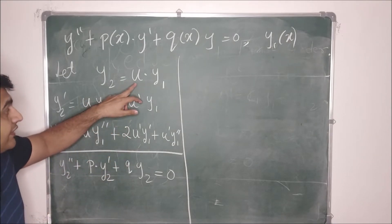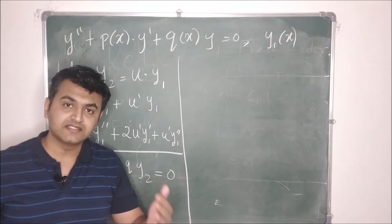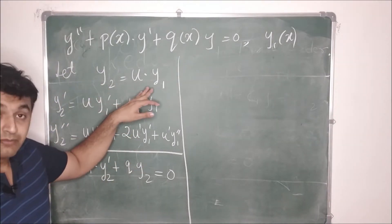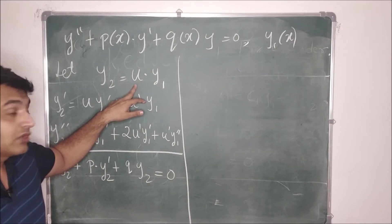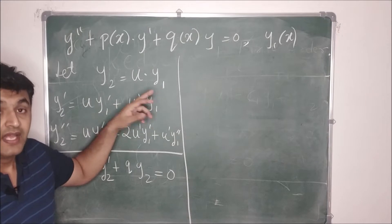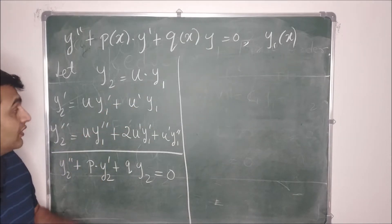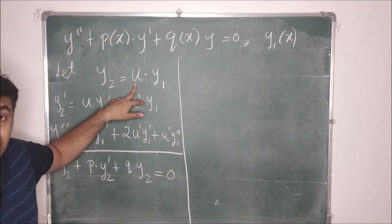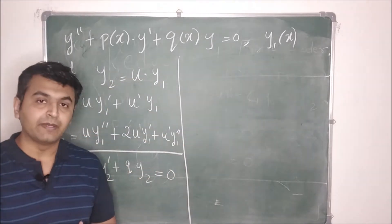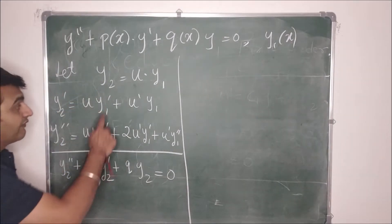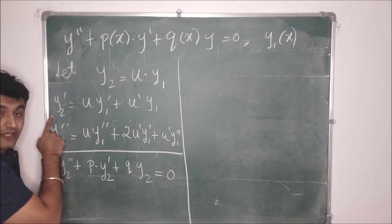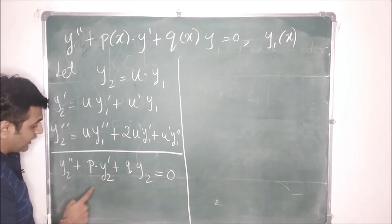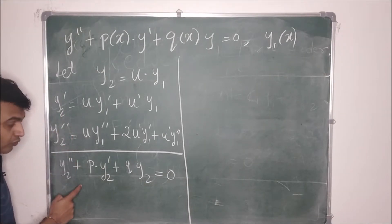We assume y2 = u·y1, where u is a function to be determined. By the superposition principle this is still a solution. If u turns out to be a constant, y2 would be a scalar multiple of y1 — linearly dependent — which is unhelpful. So we want u to be a non-constant function of x. We compute the first and second derivatives of y2 and substitute into the differential equation.